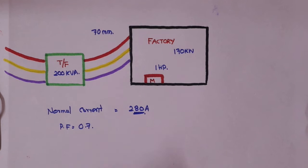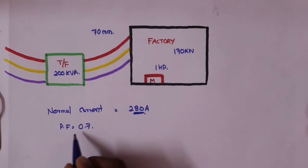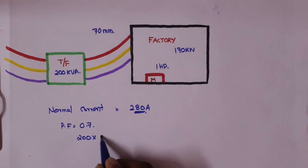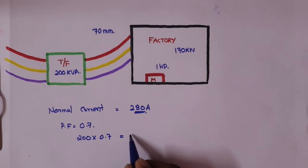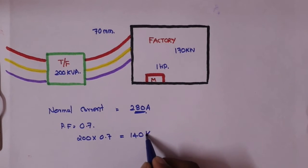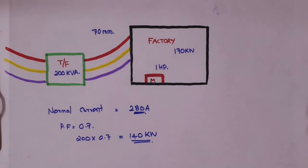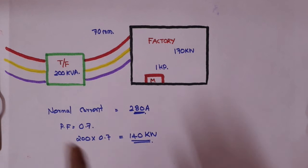First, we need the transformer. I'm using a transformer for 200 kW. I will have a power factor of 180 kW. Now, I have the power. 200 multiplied by 0.7 which is equal to 140 kW. I have the power to change the calculations. The power factor is set at 200 kW.